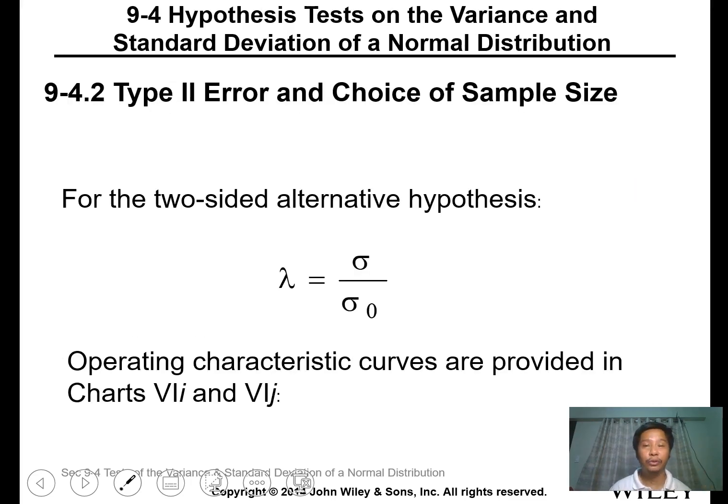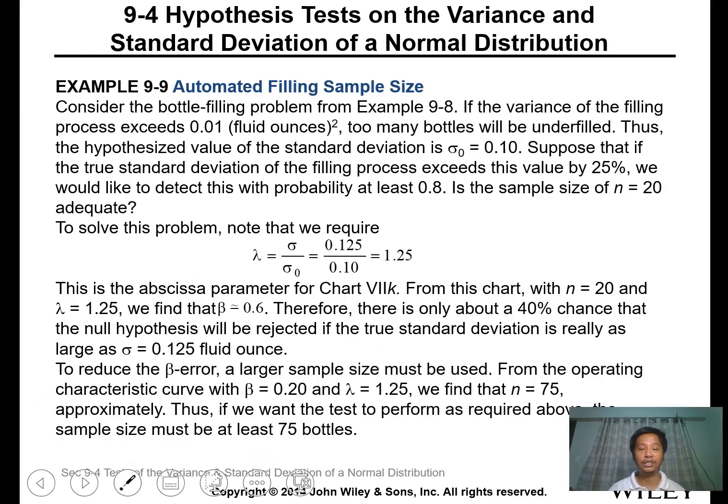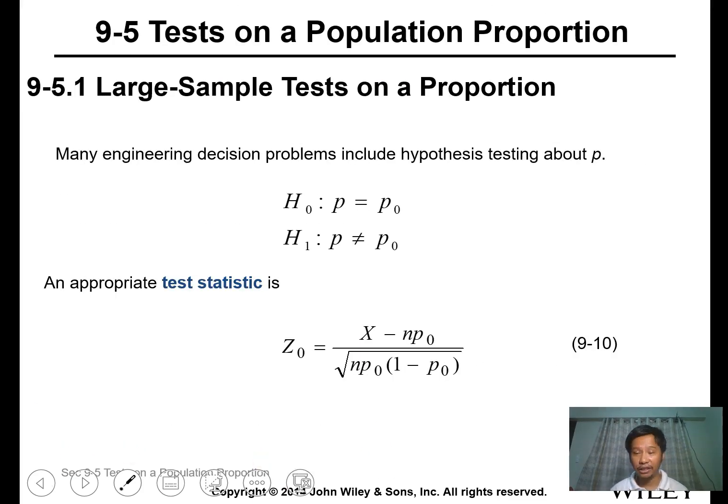Calculating the type 2 error for this problem, you get lambda, which is the ratio of sigma over sigma naught. Then you can use this table to calculate. We won't cover this as we don't use it often.